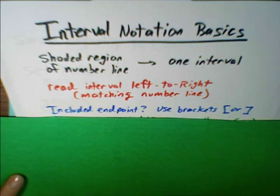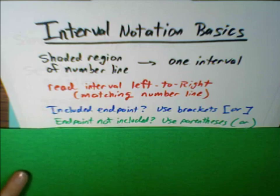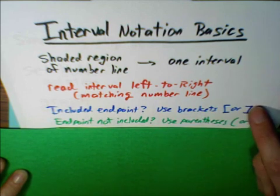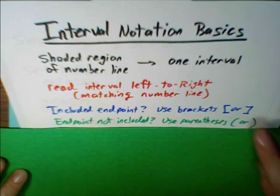If you include the endpoint, you're going to use brackets. If you don't include the endpoint, you'll use parentheses. Compare using brackets to a solid dot. Compare using parentheses to the open dot that you may have learned earlier in your school career.